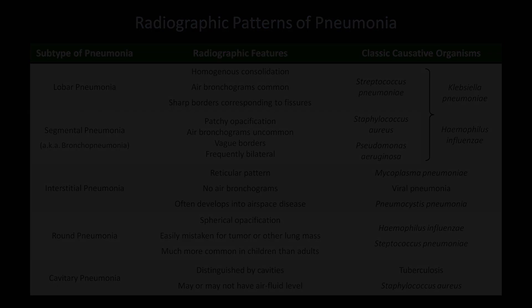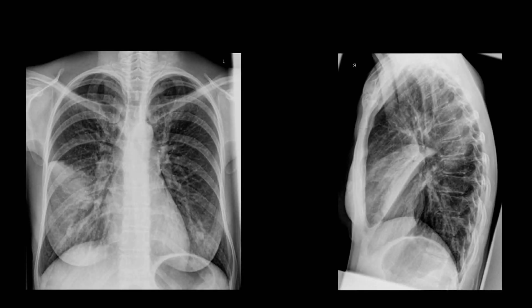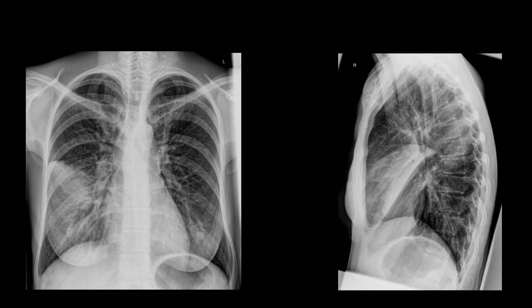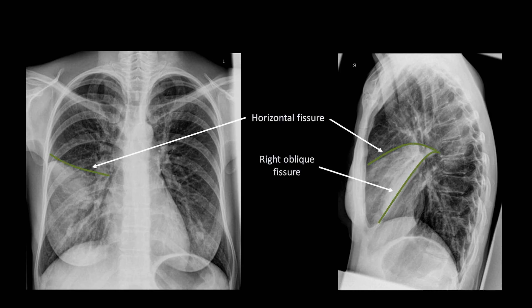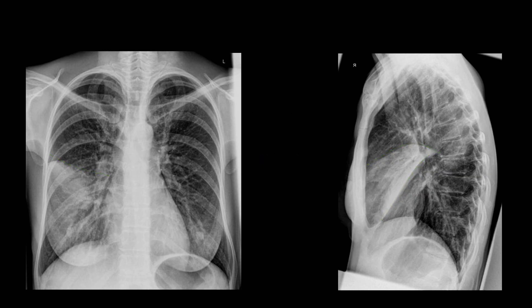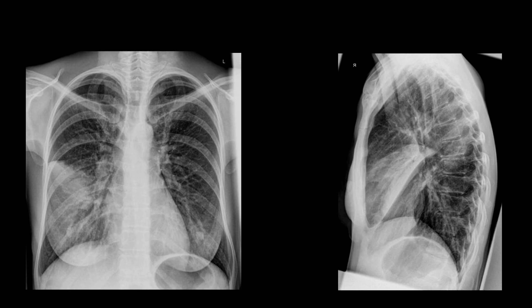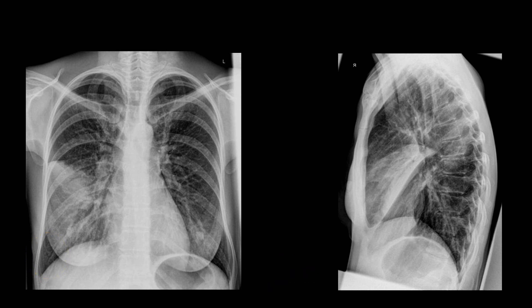Let's apply this to interpret some x-rays of pneumonia. In this example, there is opacification in the right mid and lower lung zones. There is a silhouette sign with the right heart border obscured, suggesting the opacification is in the right middle lobe. We can also see the sharp demarcation between the opacity and normal lung tissue — this border corresponds to the horizontal and right oblique fissures. There is an air bronchogram visible, and the right costophrenic sulcus is clear, suggesting the right lower lobe is not affected. Summary: this is a right middle lobe lobar pneumonia, most likely Streptococcus pneumoniae, but also possibly Klebsiella or Haemophilus influenzae.